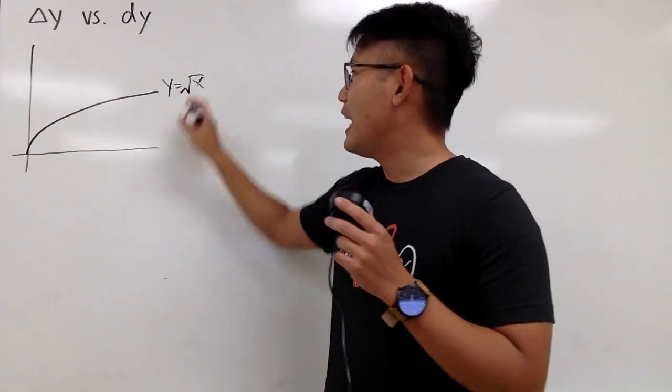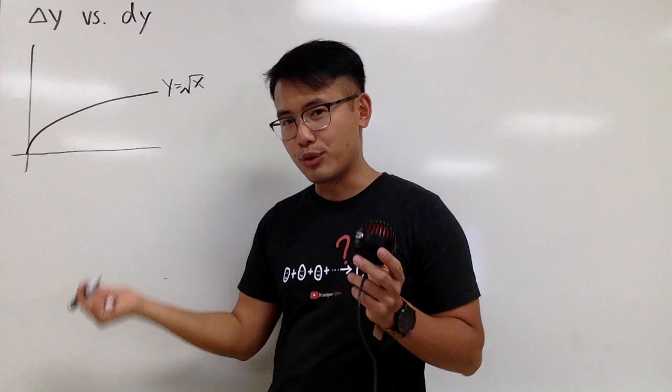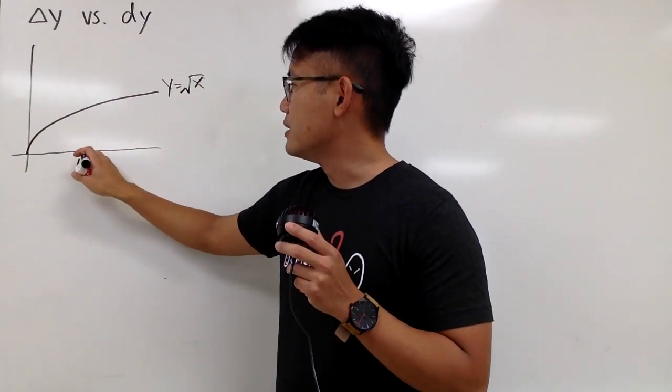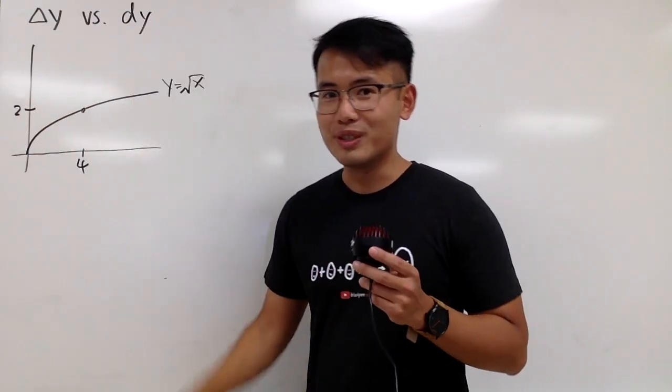And then from here I will pick a point. But I'm not going to use 0,0 or 1,1 because they're too boring. Let me pick 4,2, because when x is equal to 4 the y value is nicely equal to 2. So, you know, it's a nice point to work with.